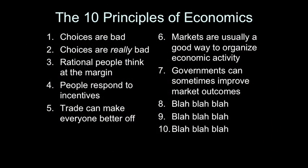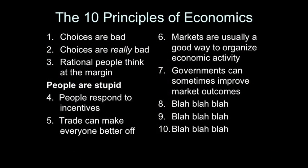Principle number three: rational people think at the margin. Translation: people are stupid. It is immediately obvious that people do not think at the margin. Nobody goes to the grocery store and says, I'm going to buy an orange, I'm going to buy another orange, I'm going to buy another orange. People don't think like that. But if people don't think at the margin, and if, as Mankiw says, rational people do think at the margin, we are led to a most unhappy conclusion: people are not rational. People, in other words, are stupid.